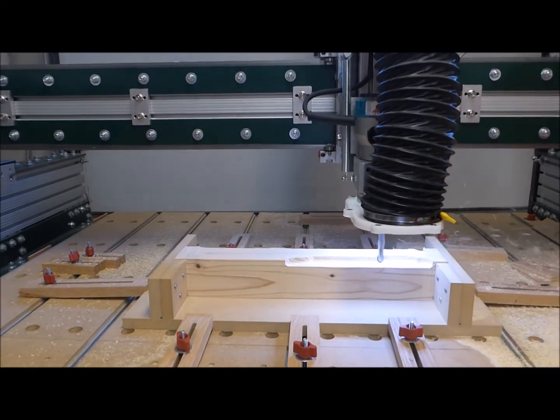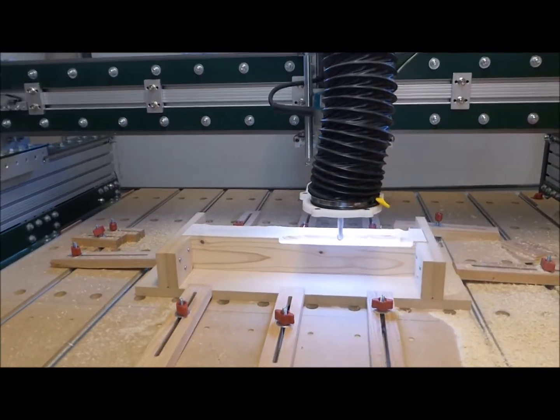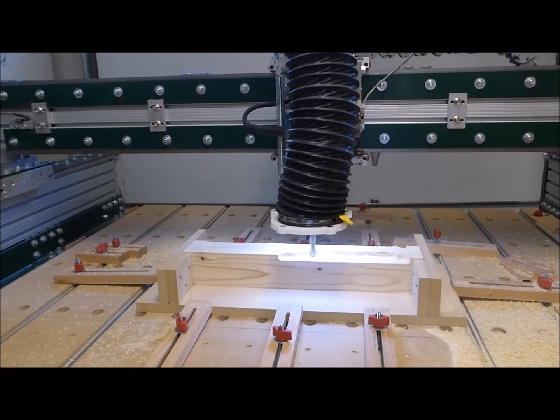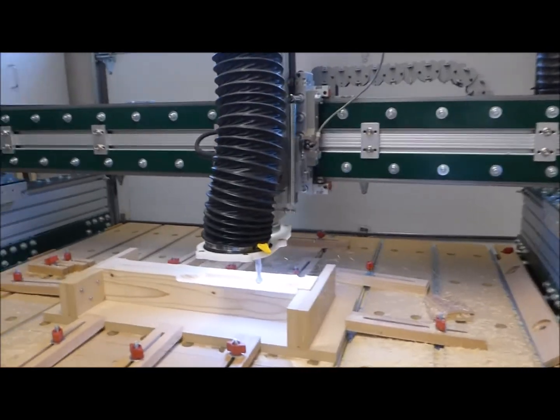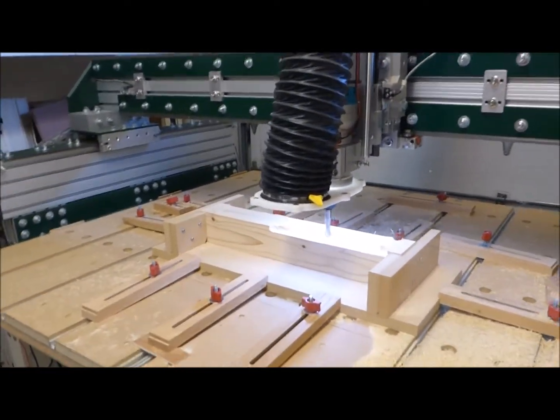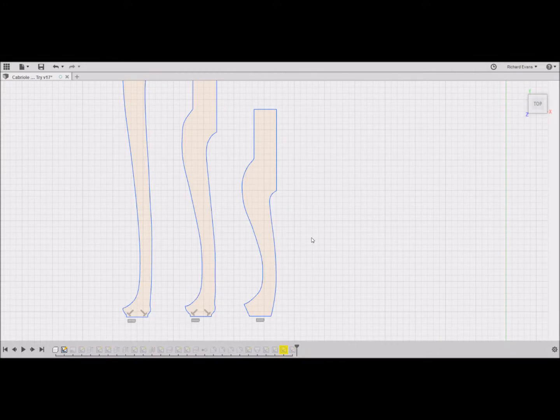Before continuing the cutting, let's backtrack and review the steps that got us to this point. The first step is creating a computer model of the leg. The second step is creating toolpaths based on that model. The traditional method for making a cabriole leg involves a template of the leg silhouette.